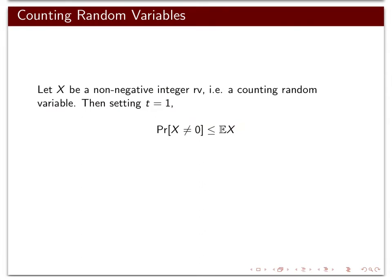For the first moment method, we apply Markov's inequality to a specific case: a counting random variable — a non-negative integer random variable, usually counting the number of times something happens — and we apply Markov's inequality with t equals one. So the probability x is at least one is less than or equal to the expectation of x. The probability x is at least one is also the probability x is not equal to zero, for a non-negative integer random variable.